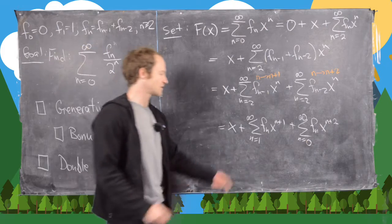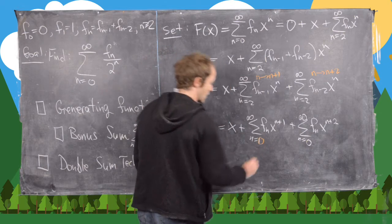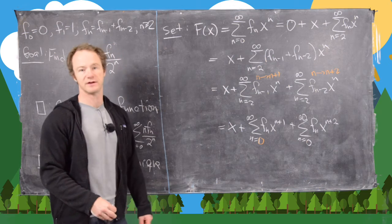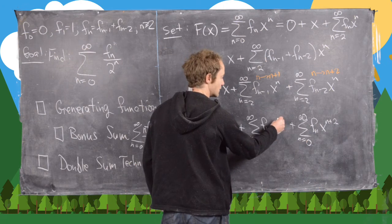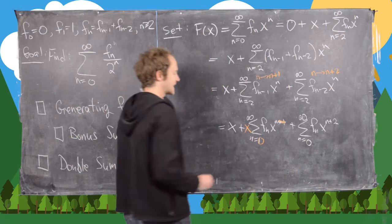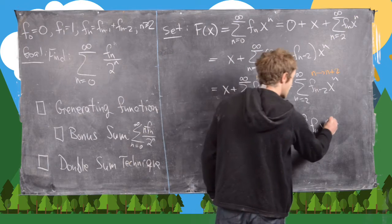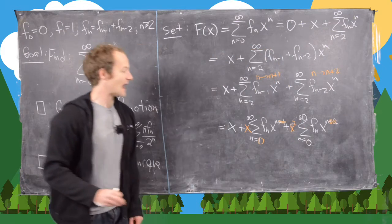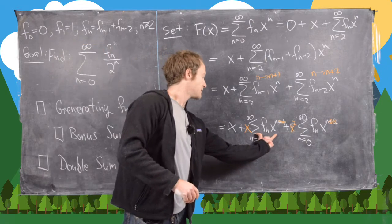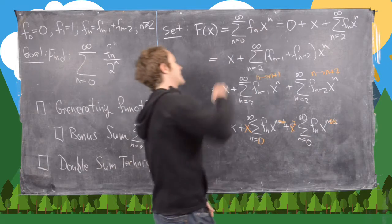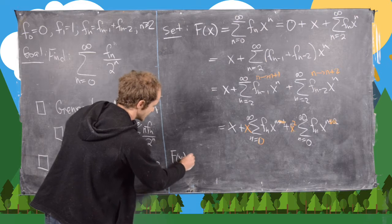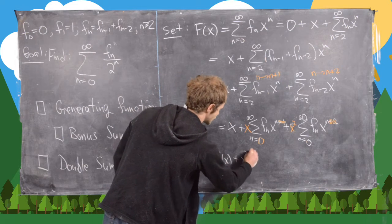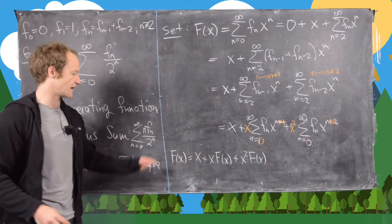We extend the first sum to start at n=0 (at no cost since f(0)=0), factor out x from the first sum, and x² from the second. Both sums are now exactly F(x), giving us the functional equation: F(x) = x + x·F(x) + x²·F(x).